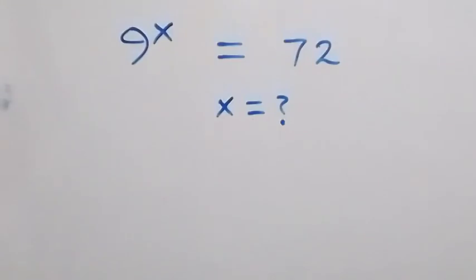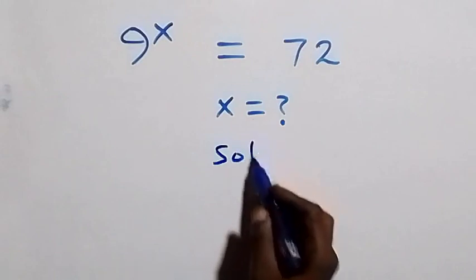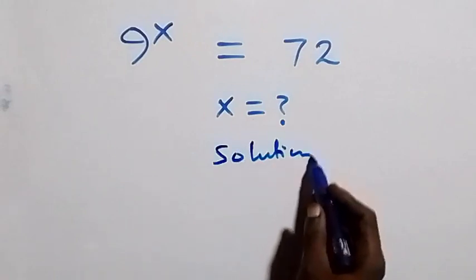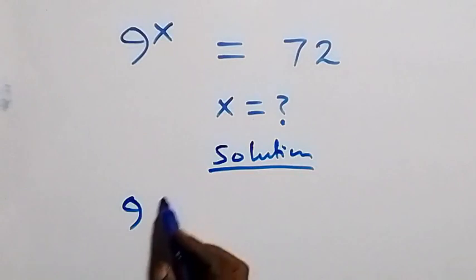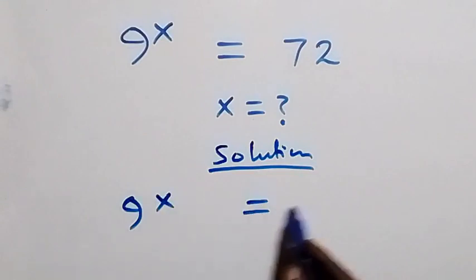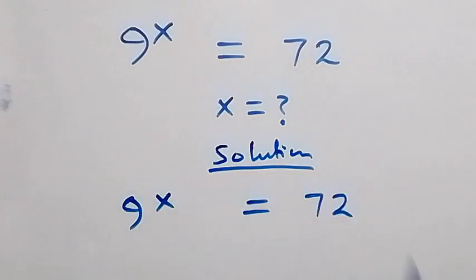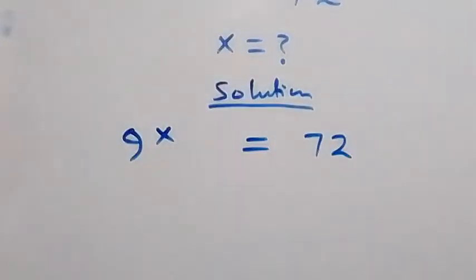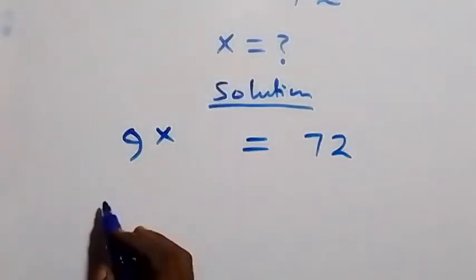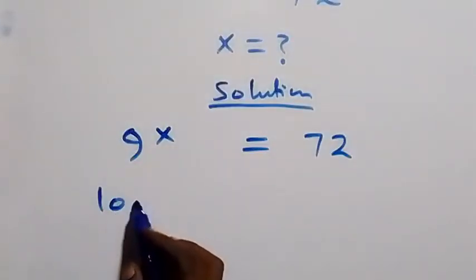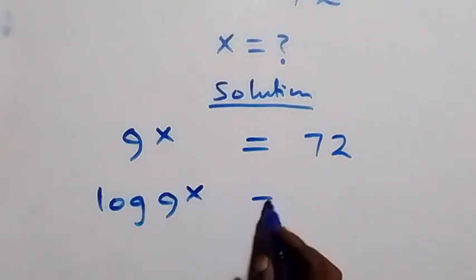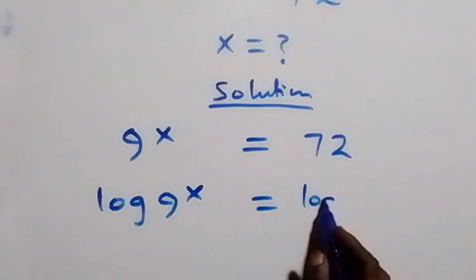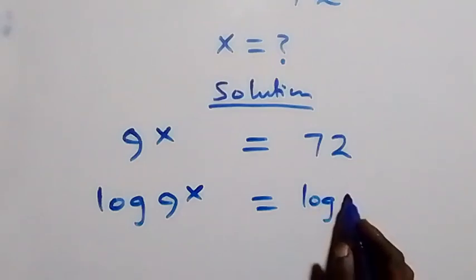Hello, you are welcome. How to solve this nice math problem. From what we are given, which is 9 raised to power x equals to 72. Let's take the log on both sides, then we have log 9 raised to power x equals to log 72.